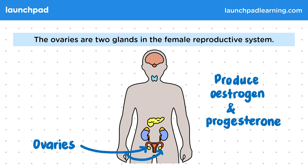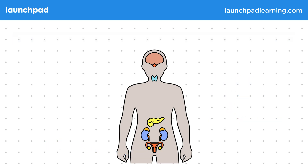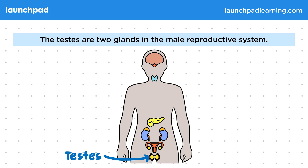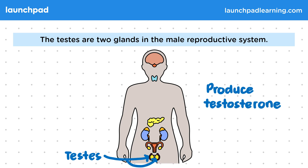What about male reproductive hormones? The testes are two glands in the male reproductive system. In this diagram, the testes are these yellow circles. These produce the male reproductive hormone testosterone.